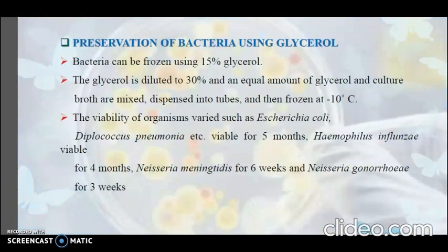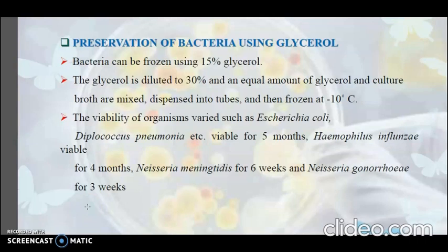The next method is preservation of bacteria using glycerol. Bacteria can be frozen using 15% glycerol. The glycerol is diluted to 30%, and an equal amount of glycerol and culture growth are mixed, dispersed into tubes, and frozen at minus 10 degrees Celsius. The viability of organisms varies: E. coli and Diplococcus pneumoniae remain viable for 5 months, Haemophilus influenzae for 4 months, Neisseria meningitidis for 6 weeks, and Neisseria gonorrhoeae for 3 weeks.